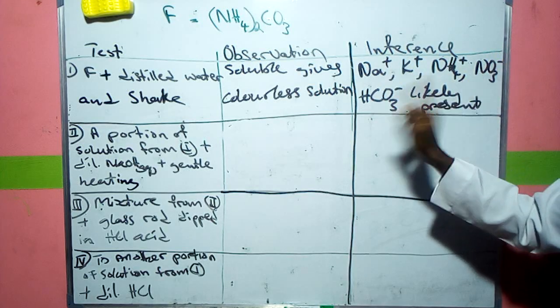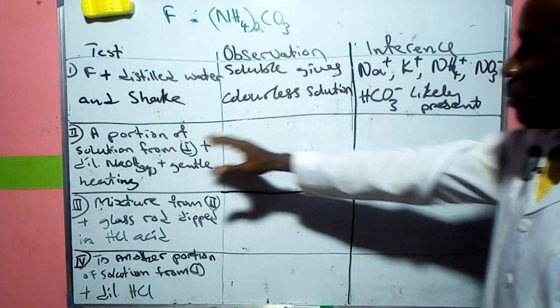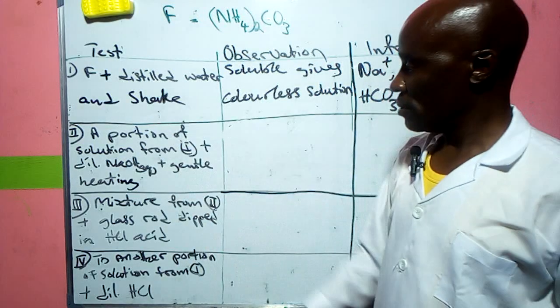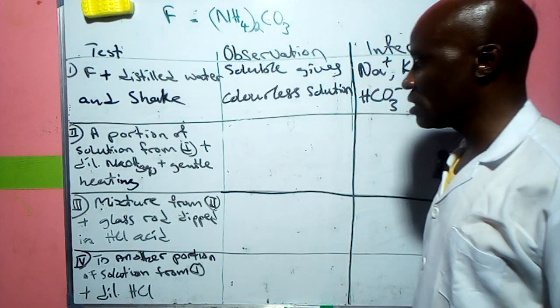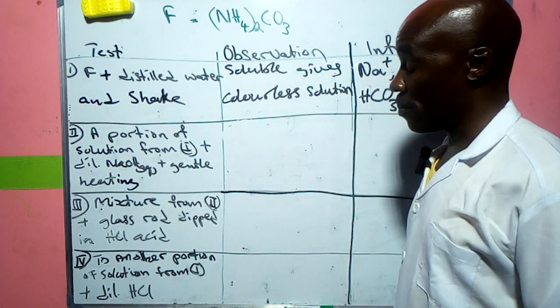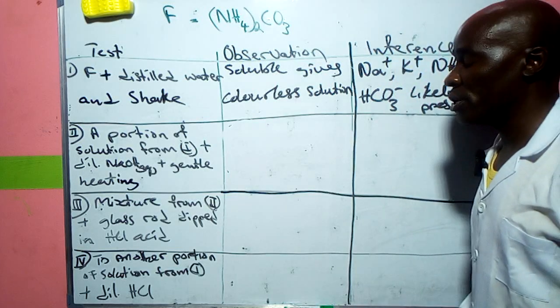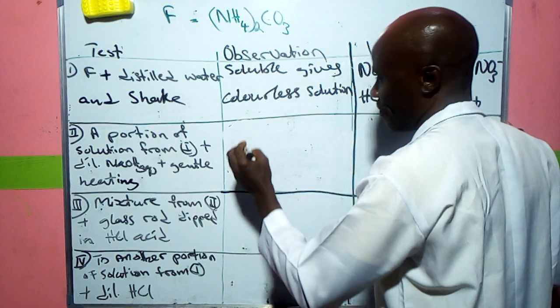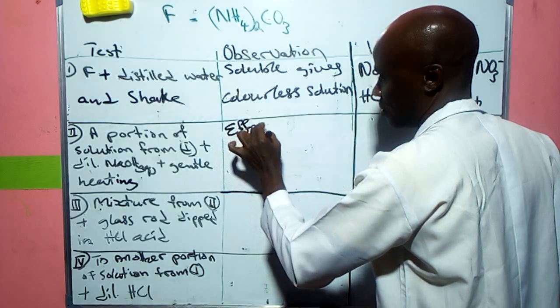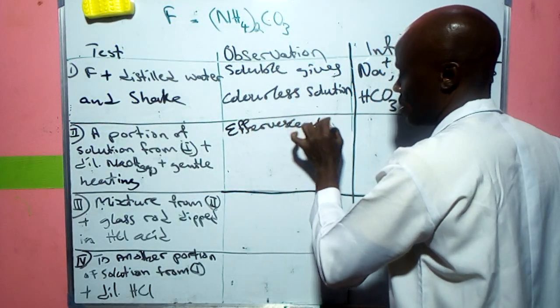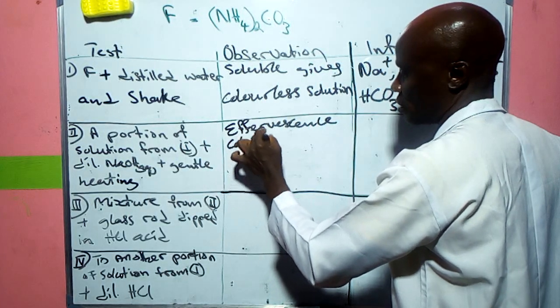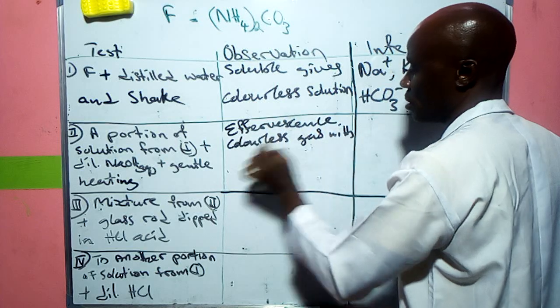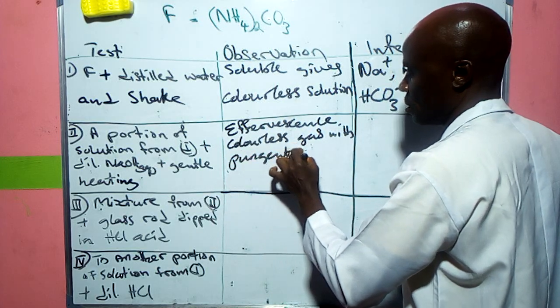The next test: a portion of the solution from test one, plus dilute sodium hydroxide, heat plus gentle heating. In this gentle heating what you observe is effervescence, a colorless gas with pungent smell.